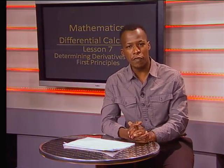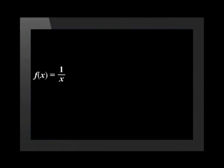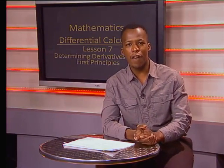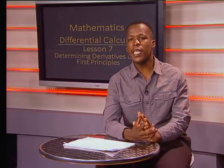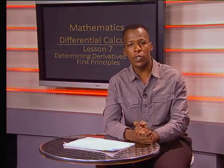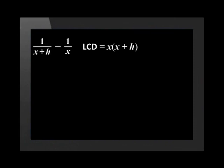Now let's determine the values of f of x and f of x plus h. We know that f of x is the function that was given to us. Therefore, f of x is 1 divided by x. In order to determine f of x plus h, we substitute x plus h in so that f of x plus h is equal to 1 divided by x plus h. We can't simplify this any further. We now substitute f of x and f of x plus h into the derivative formula. The formula will read f dash of x is equal to the limit as h tends to 0 of 1 divided by x plus h minus 1 divided by x, all divided by h. To make this easier to deal with, let's first work with the numerator. We have to take the lowest common denominator in order to simplify the two fractions. The lowest common denominator of x plus h and x is x multiplied by (x plus h).